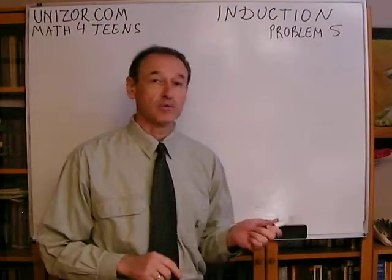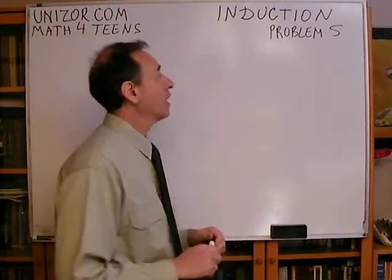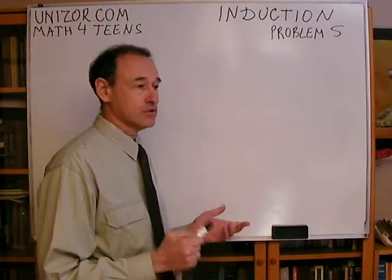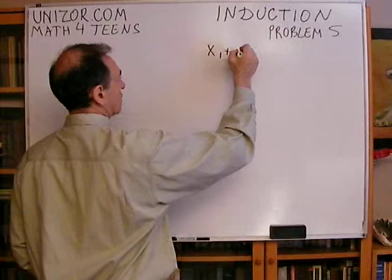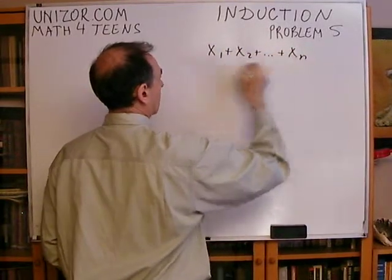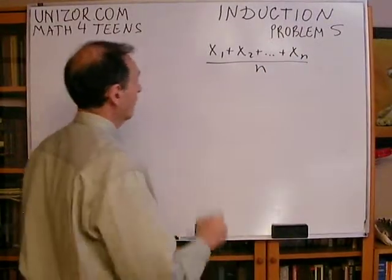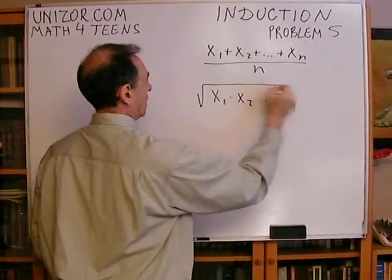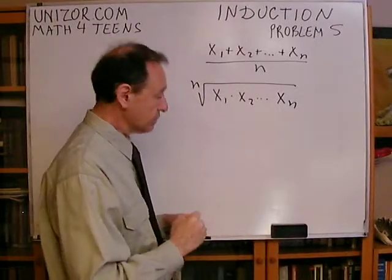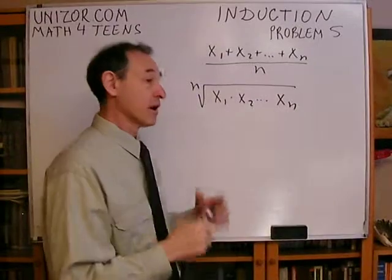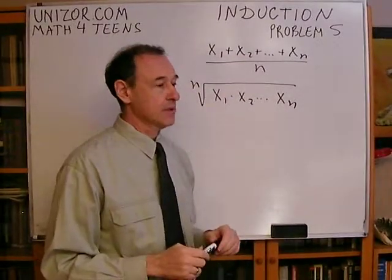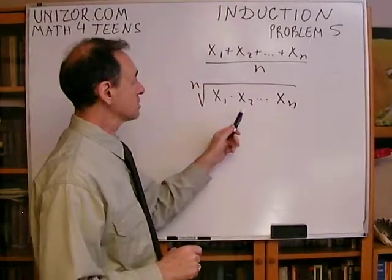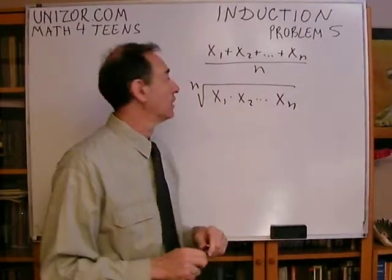This is actually a theorem attributed to French mathematician Cauchy. First of all, there are two definitions: the arithmetic average and geometric average. The arithmetic average of n numbers is their sum divided by their number. The geometric average of the same numbers is the n-th root of their product. Arithmetic average is always greater than or equal to the geometric average of n positive numbers.